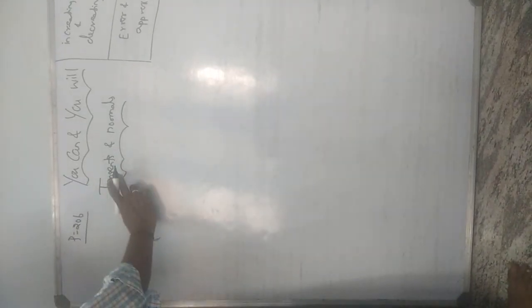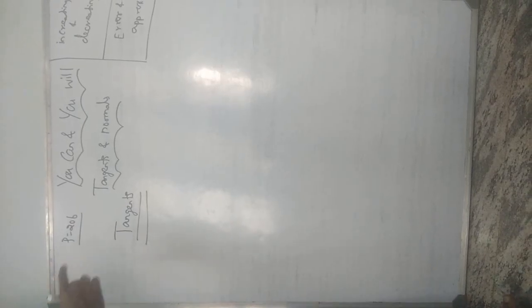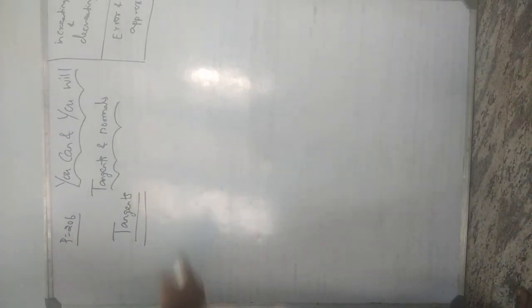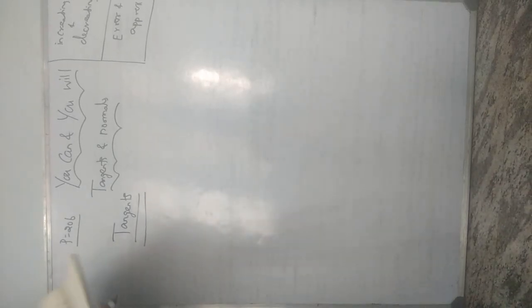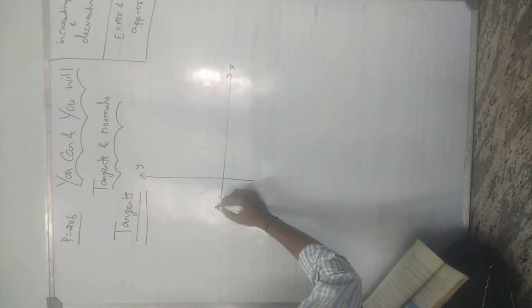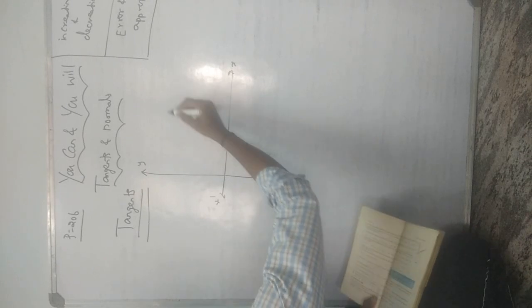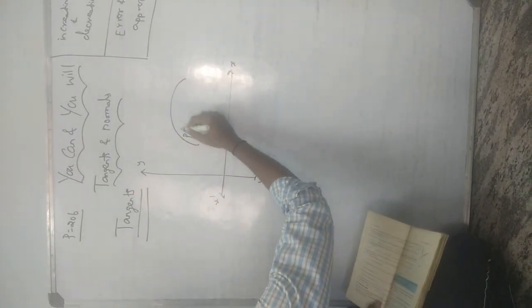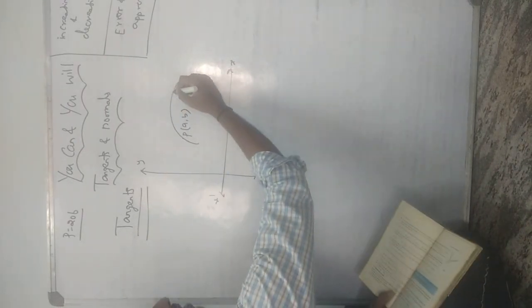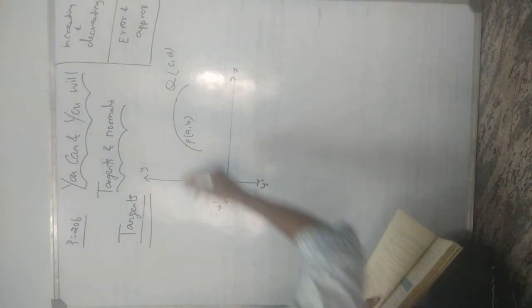I will first teach the basics — what is a tangent, what is a normal — then move on to sums. You already know this from the straight line chapter. The concept starts from circles in class 10, goes to straight lines, and now continues here in class 12. I'll take a small diagram on a two-dimensional x-y axis. There is a curve; fix a point P at (a, b) and a point Q at (c, d). If I connect P and Q, that line PQ is called a secant.